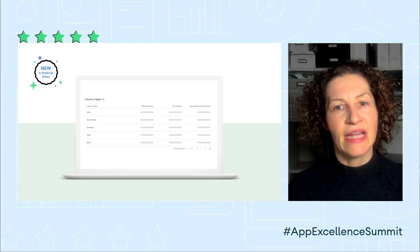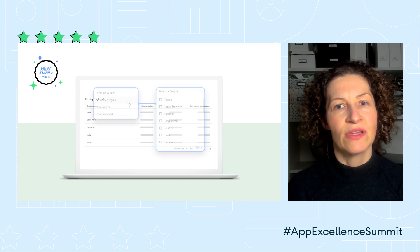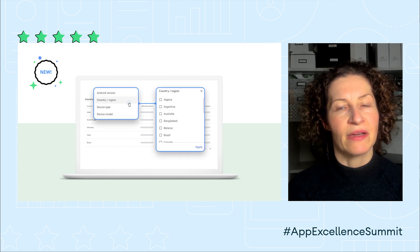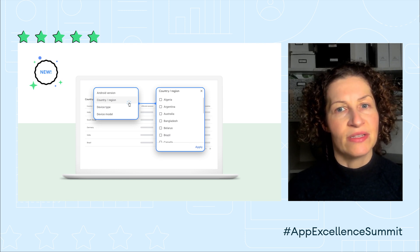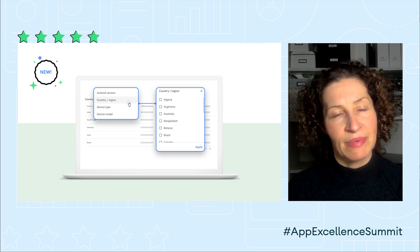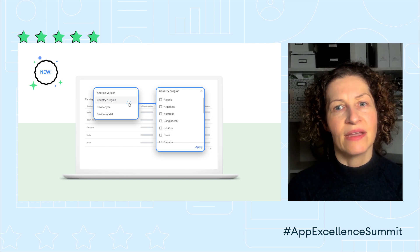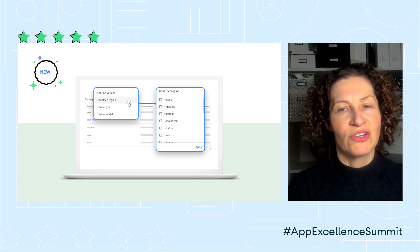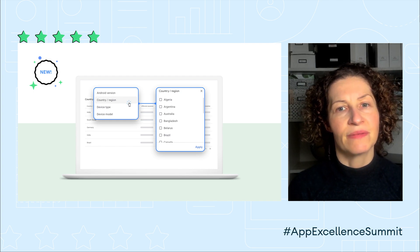Another exciting new release to call out is that Vitals now gives you country breakdowns of all your metrics. In addition to breakdowns, you can also filter metrics by country. If your app is available in multiple locations, and you have different strategies or app experiences by market, or even it's just that your users monetize differently, then understanding metrics at country level is important for both troubleshooting and prioritization. And you can get all this new country data in the API as well as the UI.